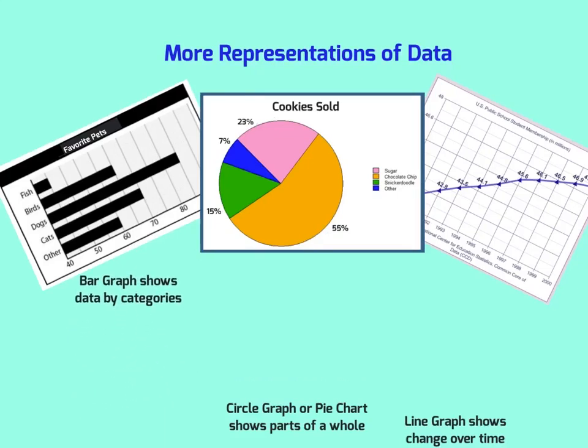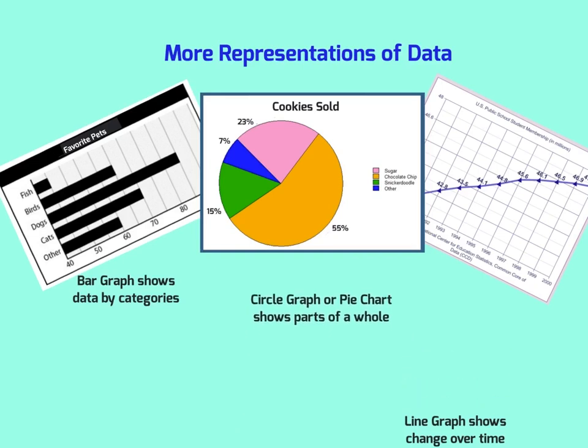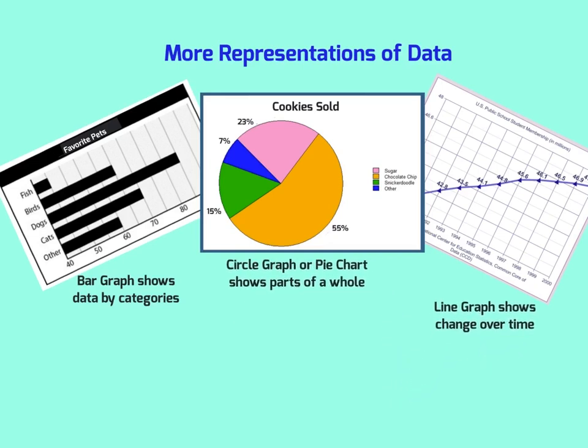Sometimes you have to choose which graph to use. If you want to show data by categories, then you usually use a bar graph. A circle graph or a pie chart shows parts of a total, and you usually use a line graph to show change over time.